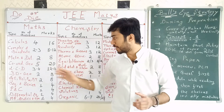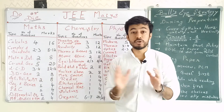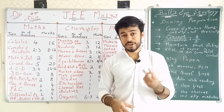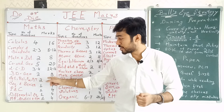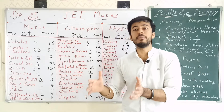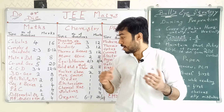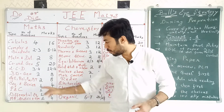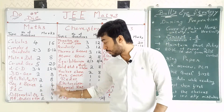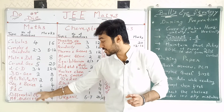Coordinate Geometry is the big topic — 5 questions, 20 marks. Limits, Continuity and Differentiability (LCD) — 3 to 4 questions, 12 to 16 marks. 3D Geometry — 2 questions, 8 marks. Sets, Relations and Functions plus Binomial Theorem — 2 questions, 8 marks. Sequence and Series — 1 question, 4 marks. Permutation and Combination — very very important — 1 question, 4 marks. Differential Equations — 1 question, 4 marks. Statistics — 1 question, 4 marks.